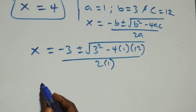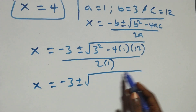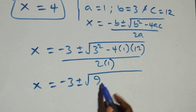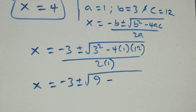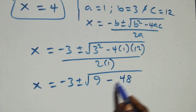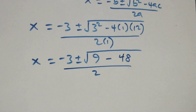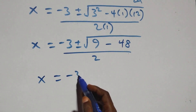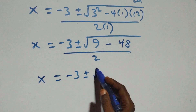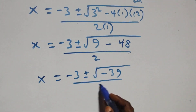That gives us x equals to minus 3 plus or minus square root of 9 minus 48, all over 2. That is, 3 squared is 9, and 4 times 1 times 12 is 48. So under the root we have 9 minus 48, which equals minus 39, all over 2.